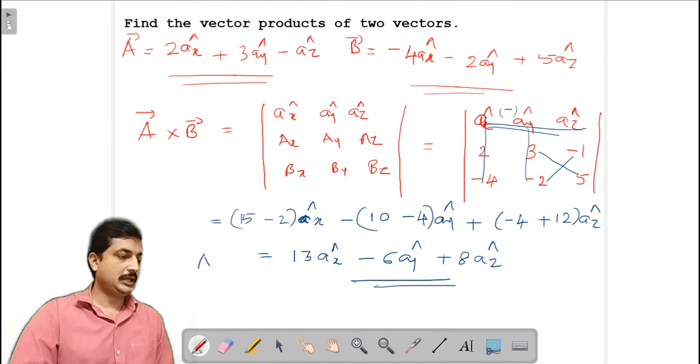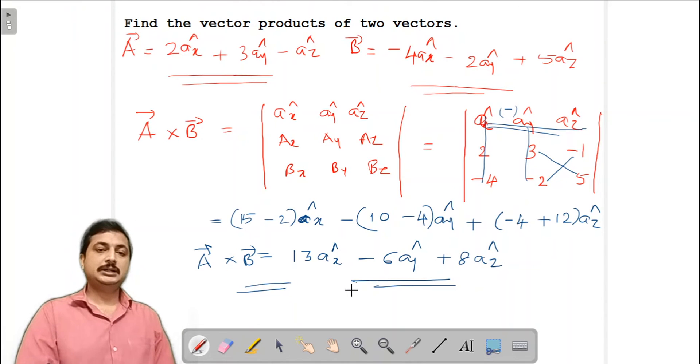So these two exercises help you in understanding that when you do the dot product, you will get a single value as the answer. We got it as minus 6 or negative 6. And when we did cross product between two vectors, the answer is a third vector, which is 13ax cap minus 6ay cap plus 8az cap. Similarly, you can practice more problems on finding dot product and cross product.